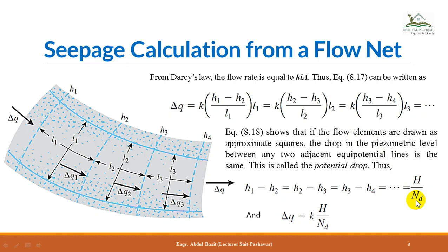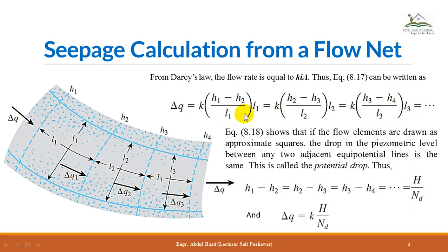So the head loss per potential drop = h/Nd. Substituting into the Darcy formula, Δq = k · (h/Nd)/l1 · l1. The l1 terms cancel, giving Δq = k·h/Nd for a single flow channel. This is the simplified equation for seepage through one flow channel when all flow elements are square.